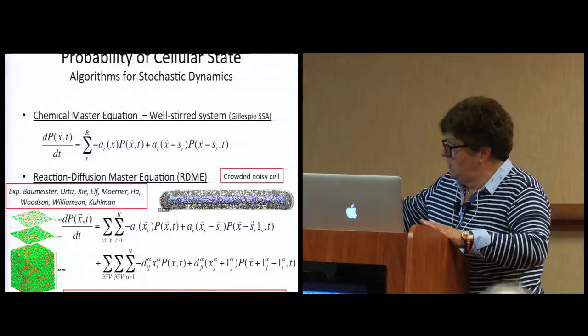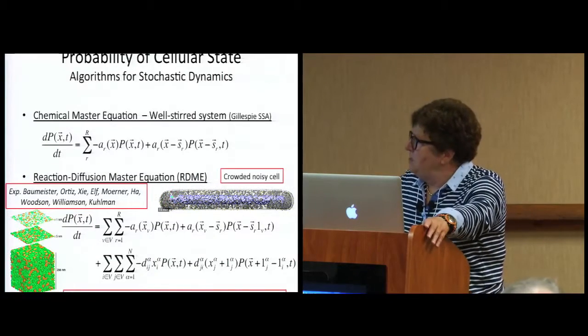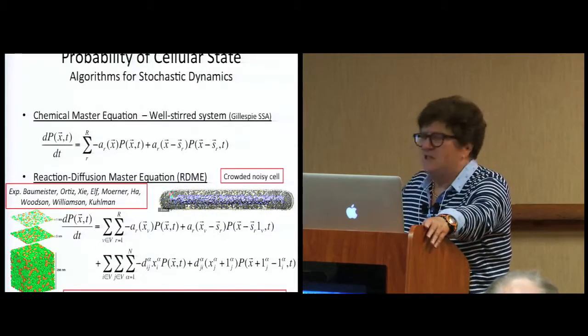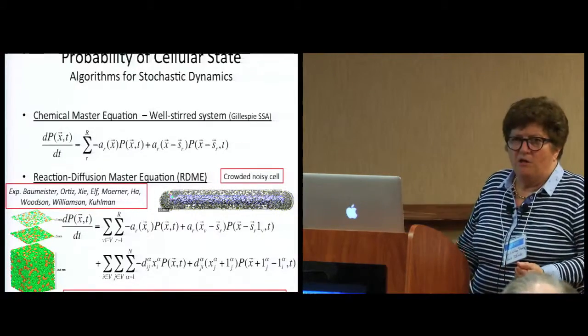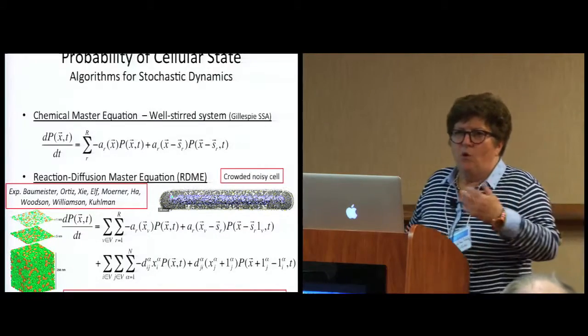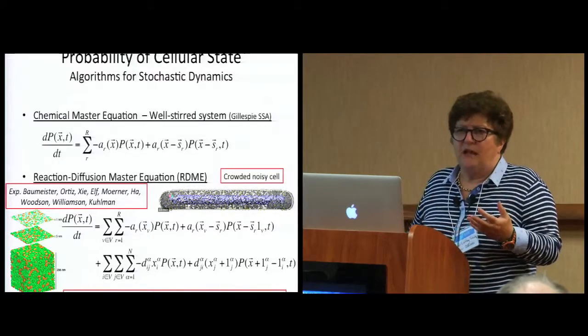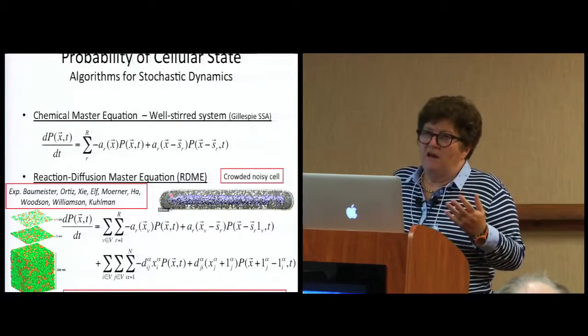You know where the genes are on the DNA. Here you're seeing the gray dots are some of the largest crowders. Those are ribosomes. And this information, even to set up the simulation, comes in from experiments. And that's in part why we also developed our lattice microbe software, is we wanted to be able to incorporate all the available data, use it to set up the system, and then also to try to validate our predictions.